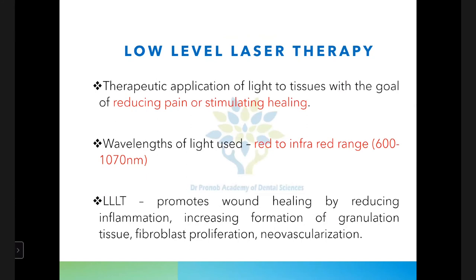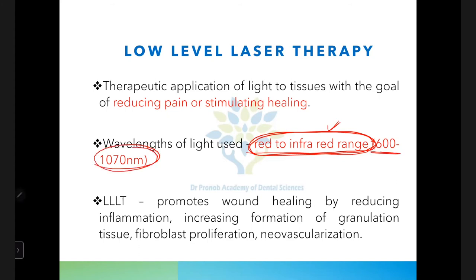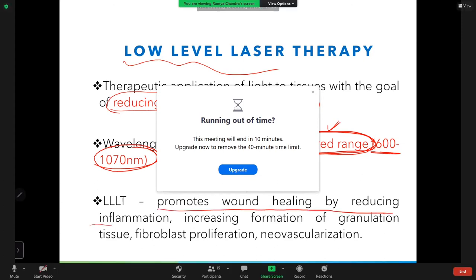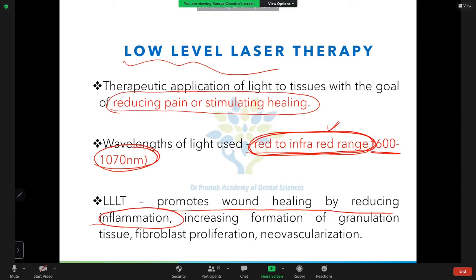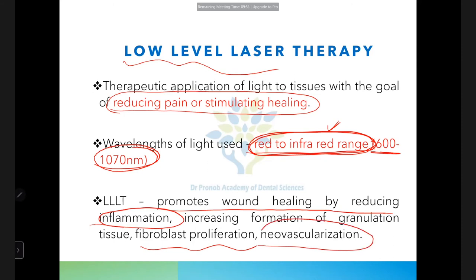Low-level laser therapy uses wavelengths in the red to near-infrared region — commonly 600 to 1070 nm. The goal is to reduce pain or stimulate healing. Its uses include promoting bone healing by reducing inflammation, increasing granulation tissue formation, proliferation of fibroblasts, and formation of new blood vessels (neovascularization).